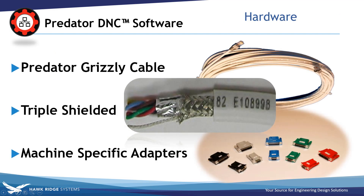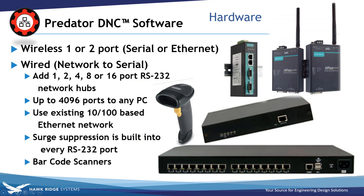Predator has a ruggedized shop floor cabling system called Predator Grizzly Cable. It is engineered for reliable data transfer at all speeds in just about any length. It is triple shielded to work in the most severe environments, with machine specific adapters to eliminate soldering and crimping on the shop floor, while providing flexibility to support machine moves. We have wireless units, one or two port, serial or ethernet, and a wide range of wired hubs for network serial applications.